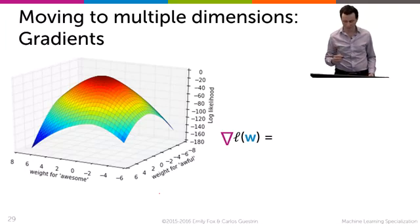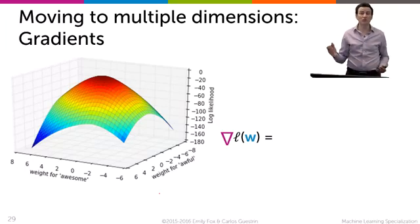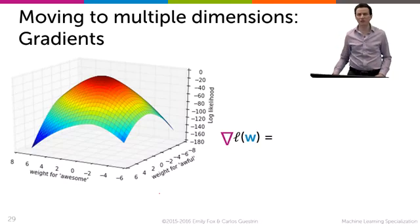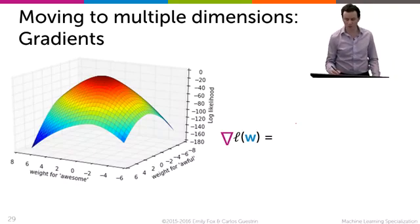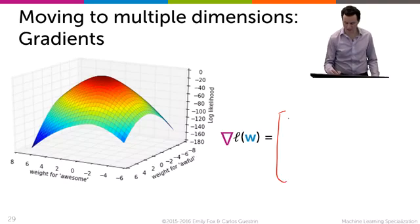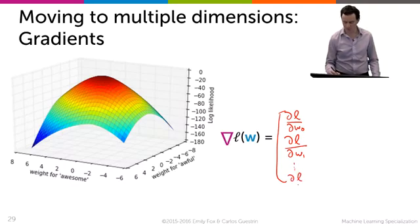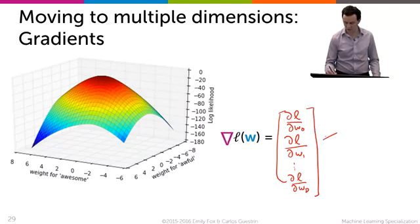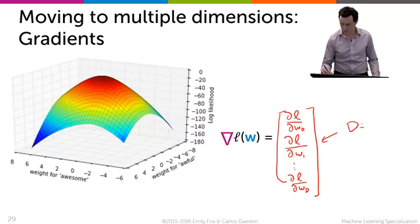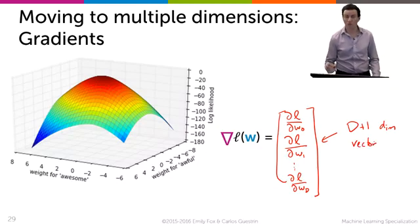Now, that was for a one-dimensional space. But we have now a larger dimensional space, because we can have thousands of coefficients we're trying to fit. So instead of computing a one-dimensional derivative, we need what's called a gradient. And the gradient is just a stacking here of the derivative of L with respect to the first parameter w_0, the partial derivative of L with respect to the second parameter w_1, all the way to the derivative L, the partial derivative with respect to the last parameter w_d. And so this is a d plus 1 dimensional vector for when you have d features.